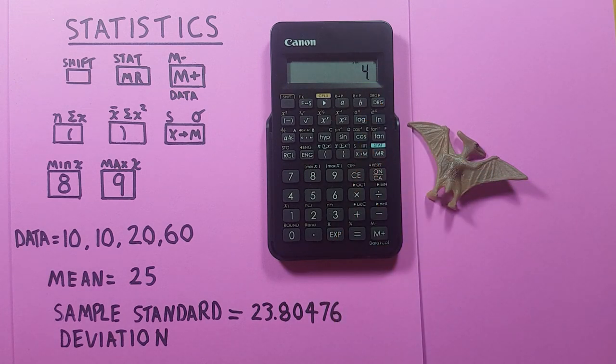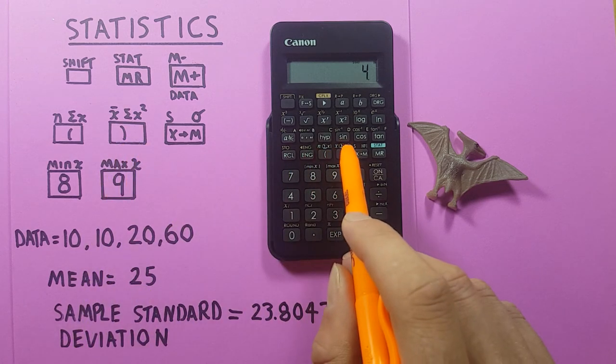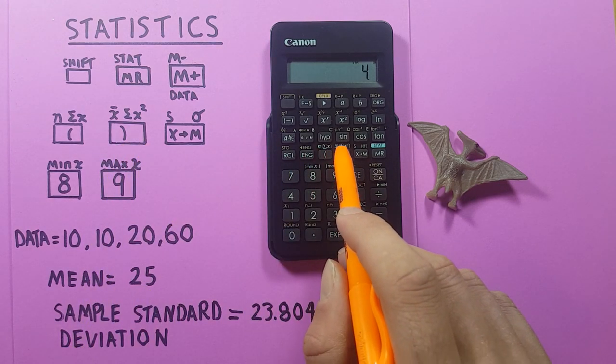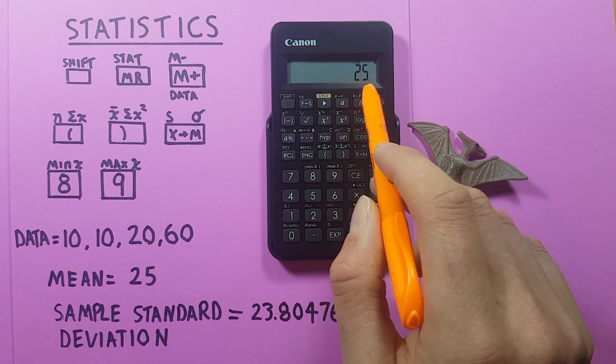Alright, now let's look at some stats we can find with this. First we'll find the mean. To do that we use this closed bracket key that looks like this, and it's located right here, has the X bar above it. Press it and this gives us the mean of our data set, which is 25.